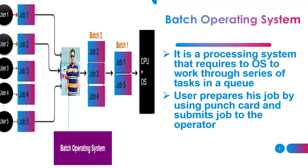the operating system works and manages tasks in the form of a queue. A user prepares his task or job by using a punch card. Users have a punch card and by using it they prepare their job, and then submit it to the operator.